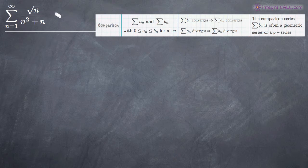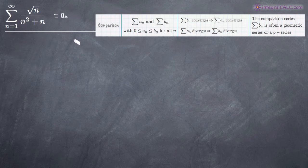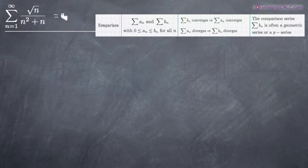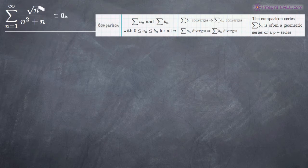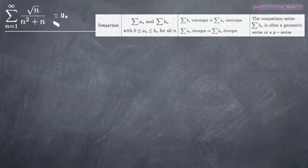To use the comparison test, the first thing we have to realize is that our original series should be called a sub n. What we need to do is find a second series called b sub n to which we can compare our original series. This is a really great candidate for the comparison test because when you have a fraction like this, you can take the terms from the numerator and denominator that have the greatest effect on the magnitude to find a series b sub n that's similar enough to make a comparison.